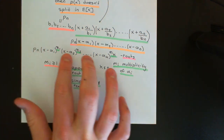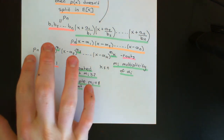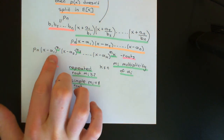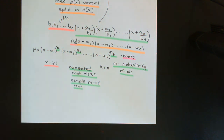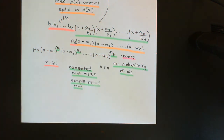So this is the way we normally write the degree one factorization of a polynomial in its splitting field: the leading coefficient Pₙ out front, then degree one factors (X − αᵢ) each to the power of the multiplicity of that root, all in a string. Of course, all of the multiplicities M₁, M₂, ..., Mₖ add up to the degree of the polynomial N. In the next video, we will prove the existence of a splitting field.